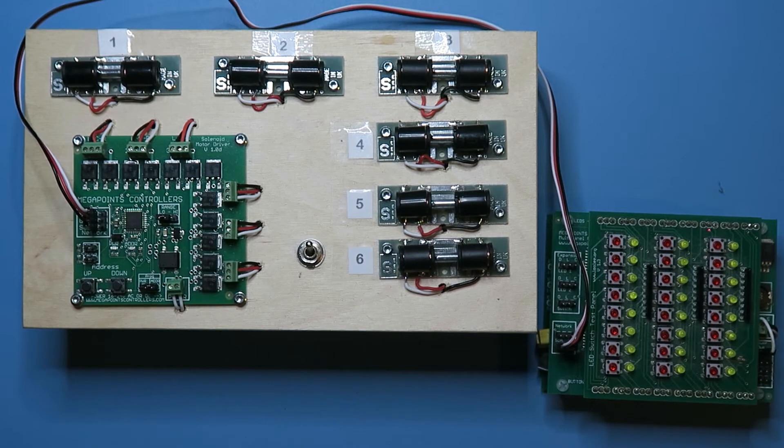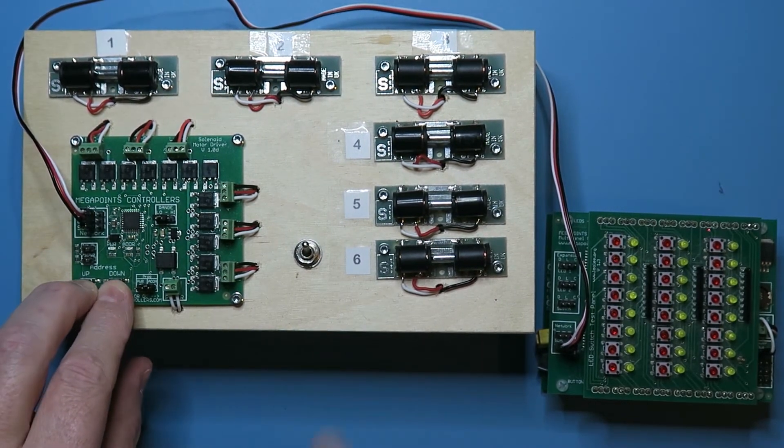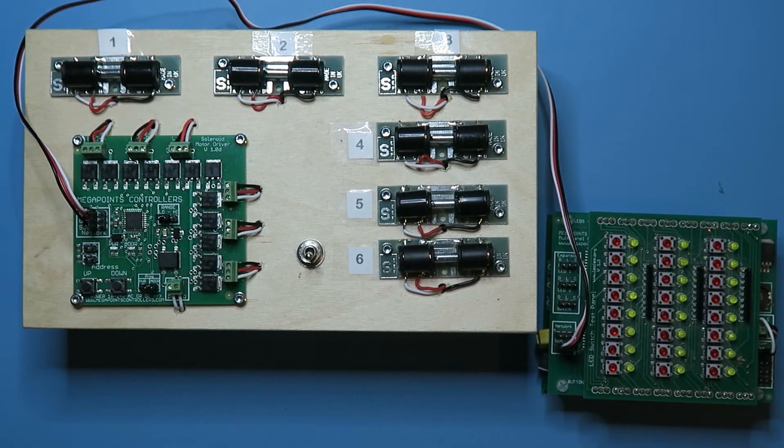I'll turn the power off, check my jumpers are in the right position, press and hold both buttons, turn on, both LEDs come on and the board is now in its default state.